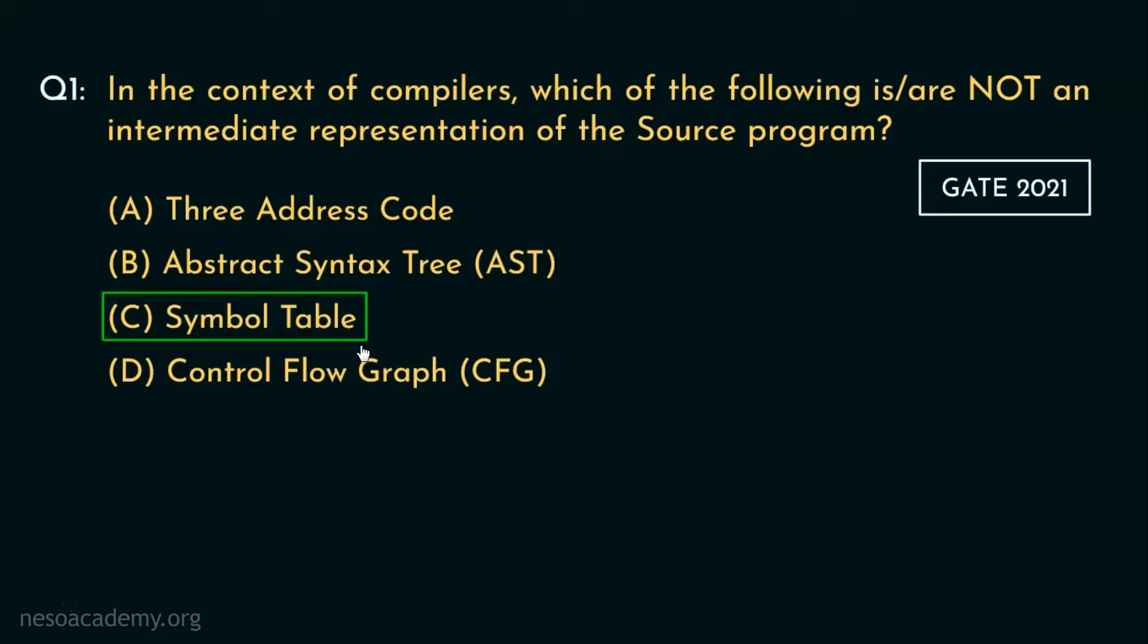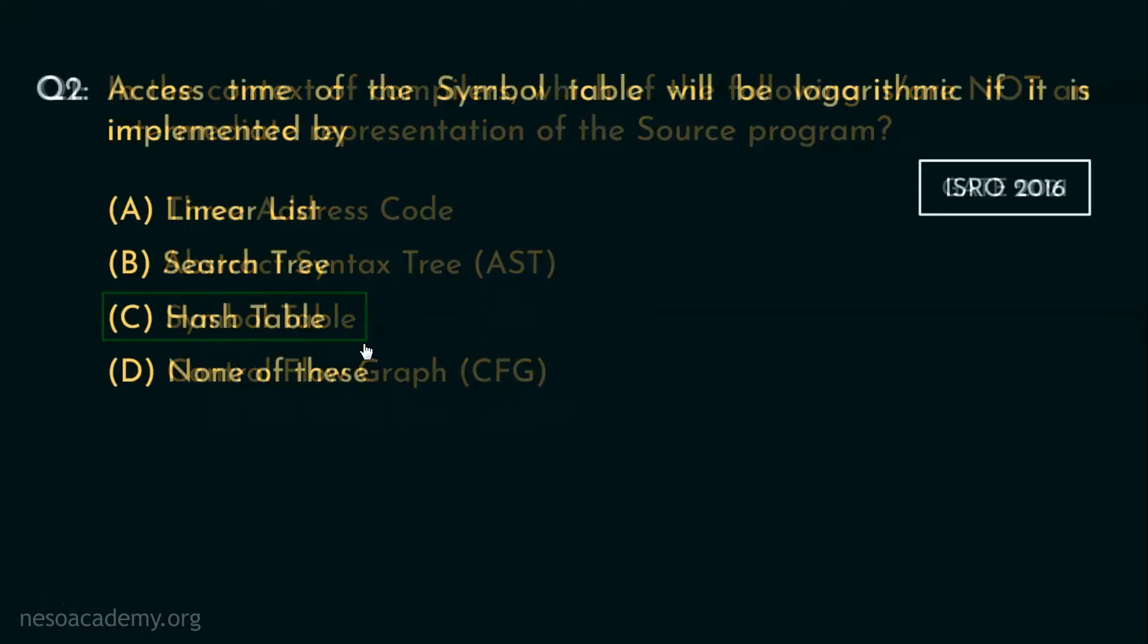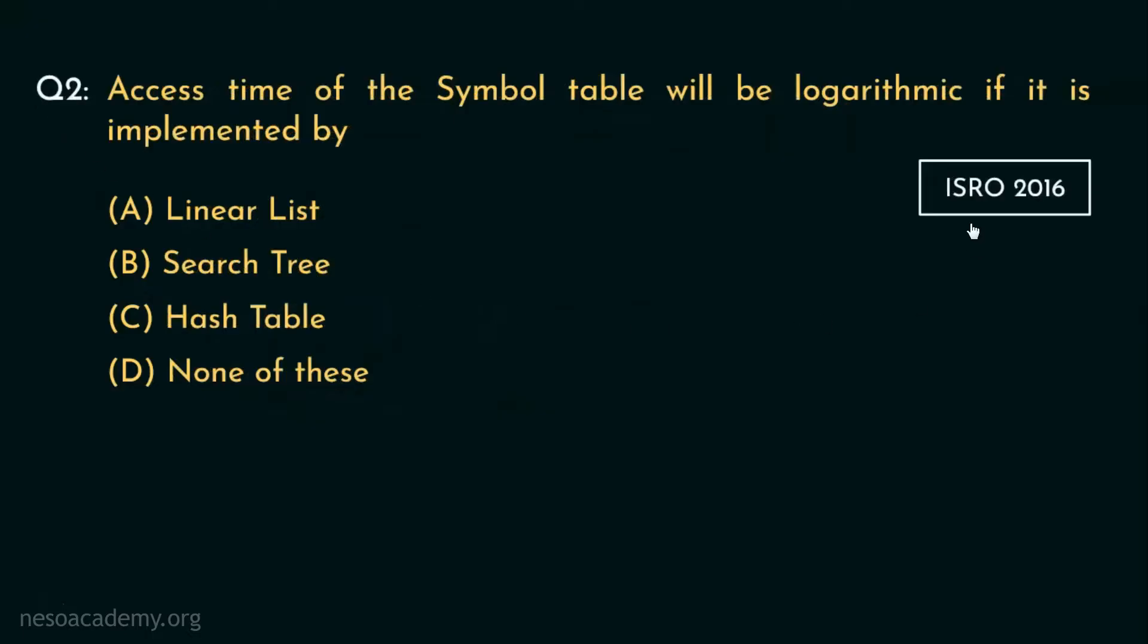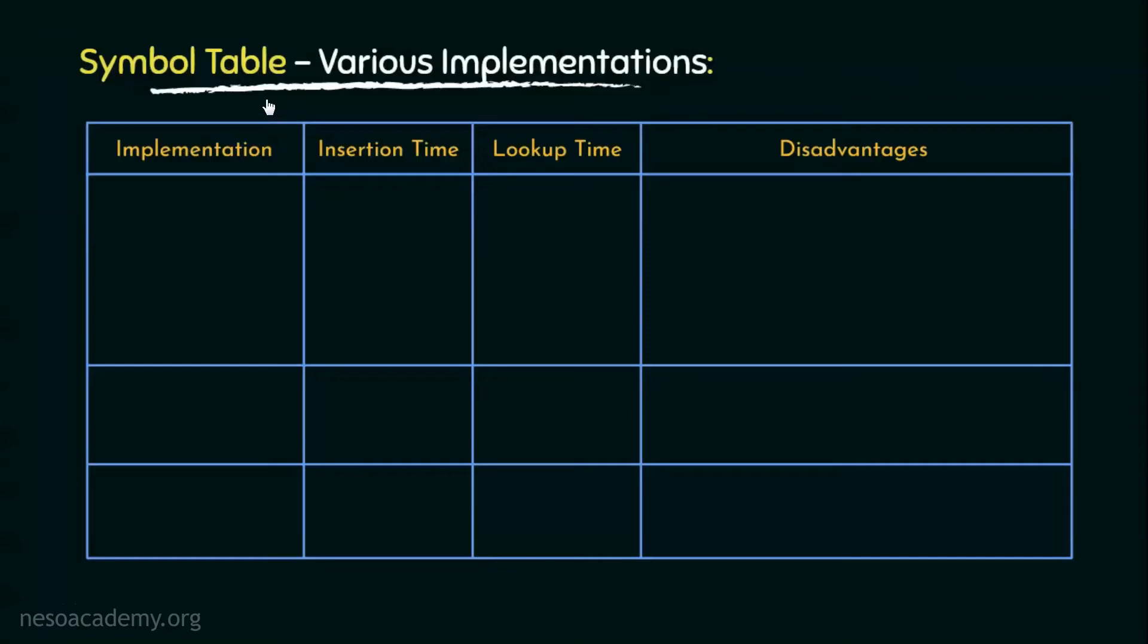Now let's move on to the next question. Consider this question. It came in ISRO 2016 paper. Access time of the symbol table will be logarithmic if it is implemented by option A, option B, option C, or none of these. Now let's find out the answer to this question. Now access time is also known as the lookup time. Let's analyze the various implementations of the symbol table.